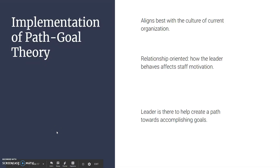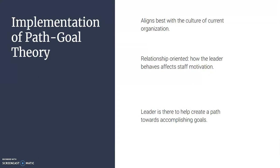For implementation, I selected the path-goal theory because I'm really big on goal setting, and this theory is based on the motivation theories of goal setting and the expectancy theory. It aligns best with the culture of my current organization, which is relationship-oriented. The path-goal theory is also very relationship-oriented. It's challenging to help staff create goals if you don't know them — there has to be a positive, cooperative relationship with give and take.